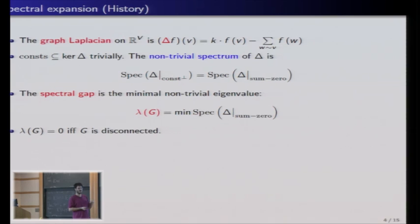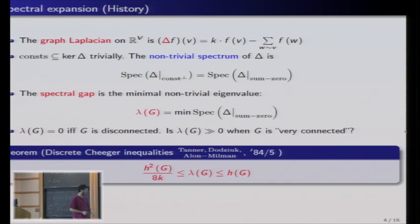And first of all, note that the spectral gap vanishes at zero exactly when the graph is disconnected. Because really the kernel here is not only the constant function, but also the locally constant functions. So functions which give the same value to neighbors. And you have a locally constant function which sums to zero exactly if the graph is disconnected. So if lambda equals zero means that the graph is disconnected, maybe lambda very big, very large lambda means that the graph is very connected, which is what we want.